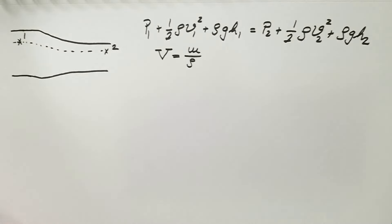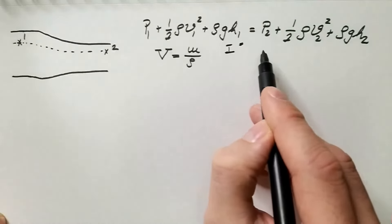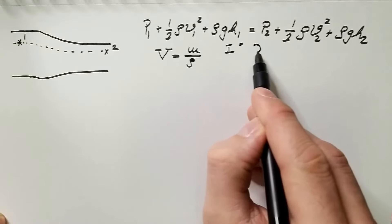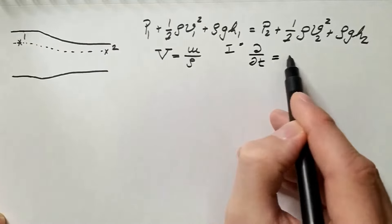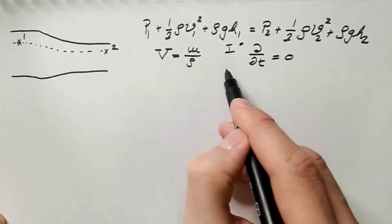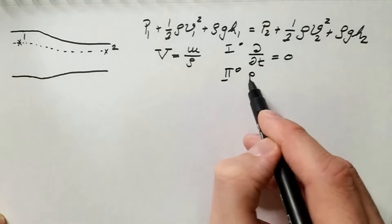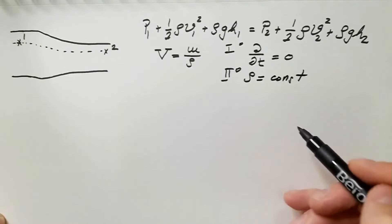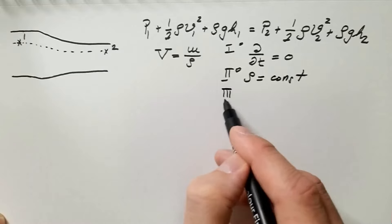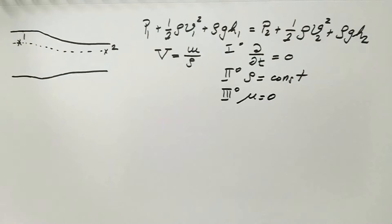Bernoulli's equation is valid if the following conditions are satisfied. Condition one: the flow has to be steady state, which means all partial derivatives with respect to time have to be zero. Two: the flow is incompressible, which means ρ is constant — there is no change of density in the flow field. And three: the flow is inviscid, which means μ, the dynamic coefficient of viscosity, is zero.